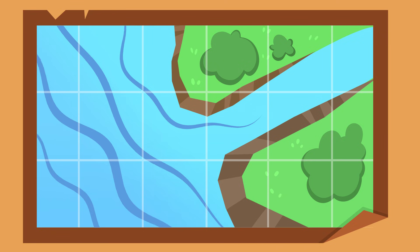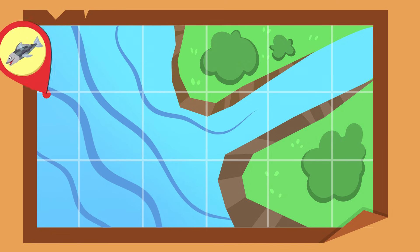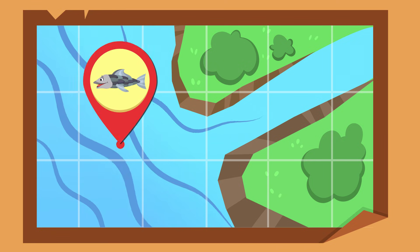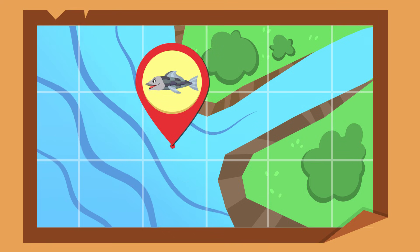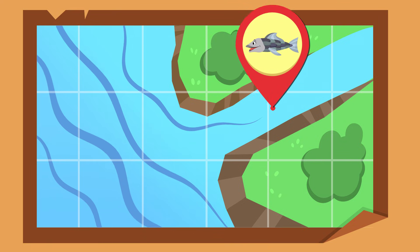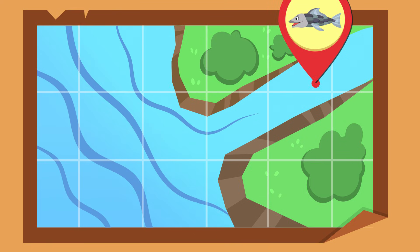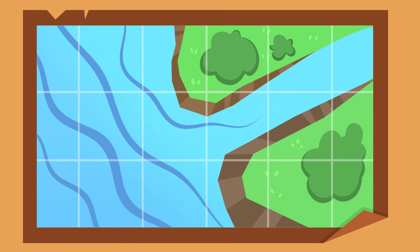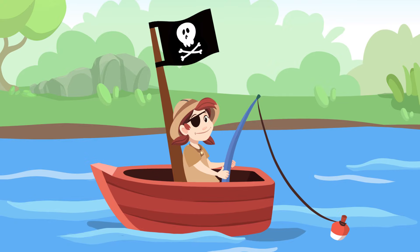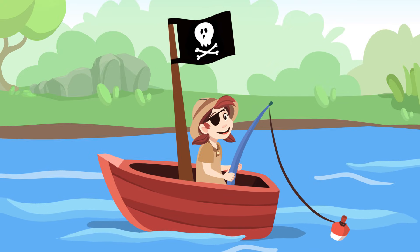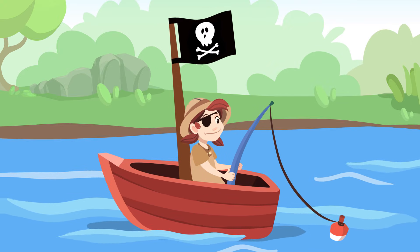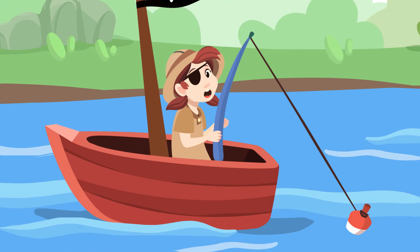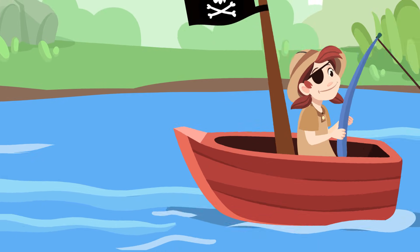Did you know that there are fish like salmon and eel that travel all the way from areas of saltwater to areas of freshwater? What a trip! And that is all about fish. Oh, I think I've got something — see you later!